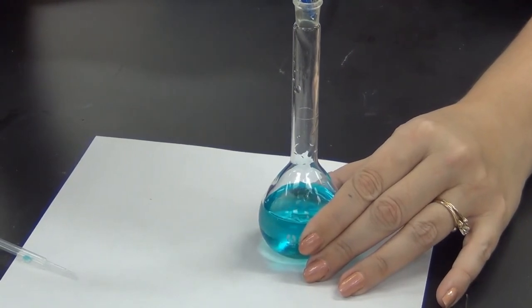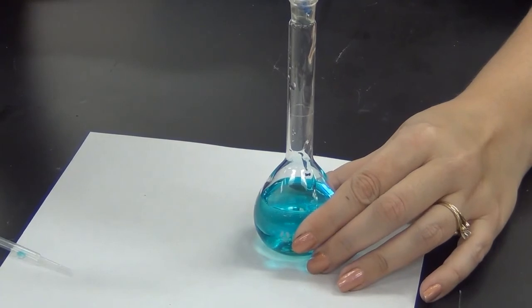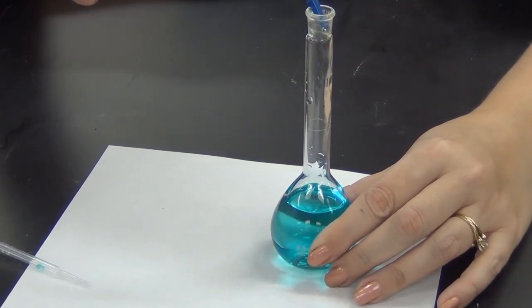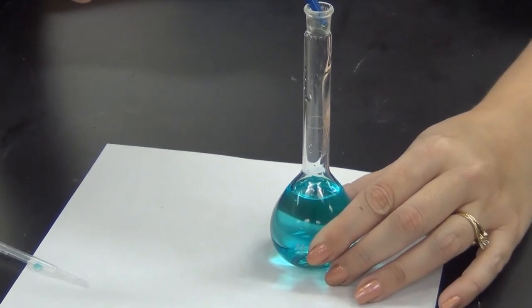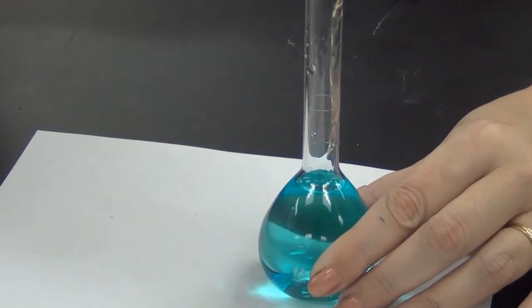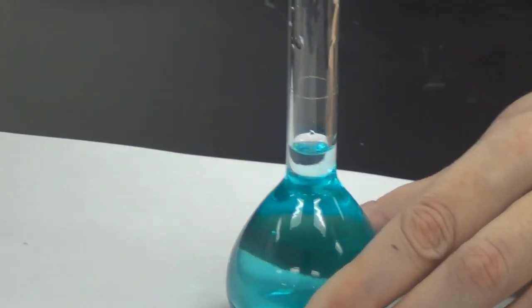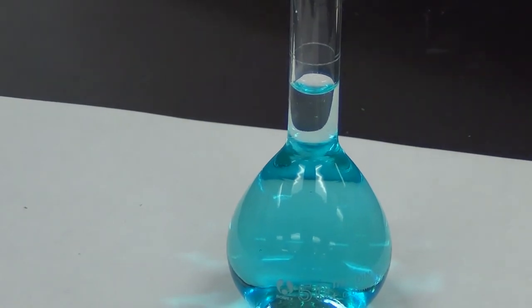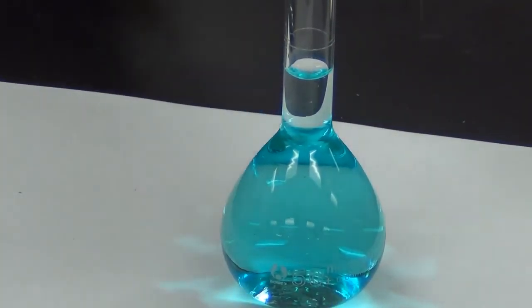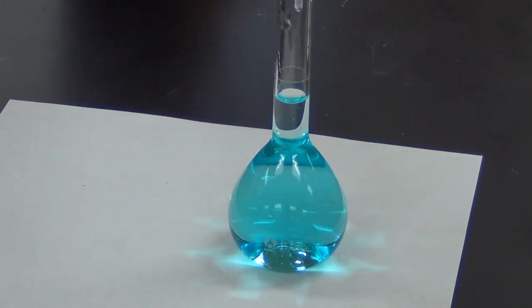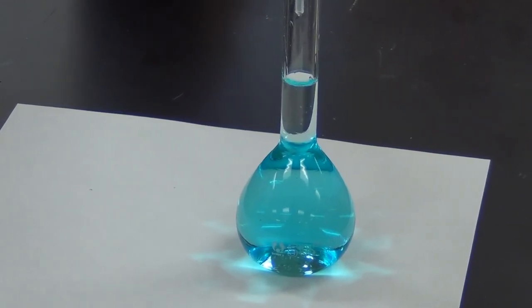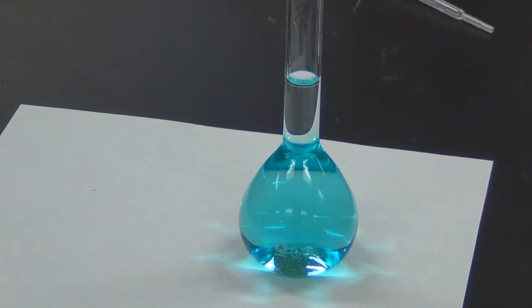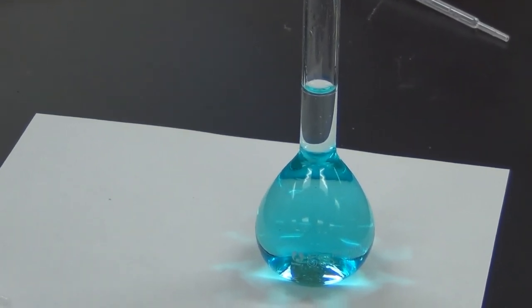Now when you start to fill one of these volumetric flasks, for the first while it feels like it takes forever because you're filling up the wide bottom part. But don't take your eyes off of it because once you get up to the neck of the flask where it's much narrower, it starts to fill a lot faster. You can see how much quicker the water level is changing as it gets up into the neck. Once we get close I'm going to use a pipette and get down at eye level, making sure I don't get any bubbles until I get right at the line with the bottom of the meniscus. That's 50 milliliters of solution.